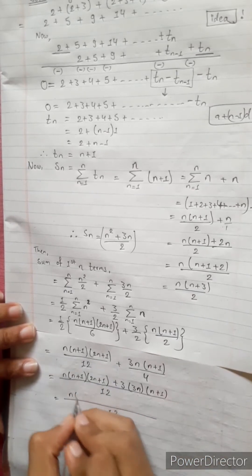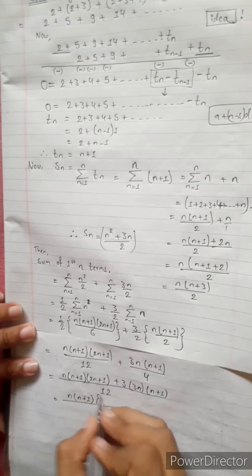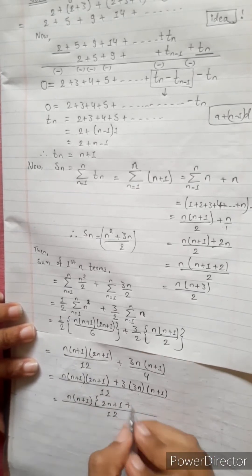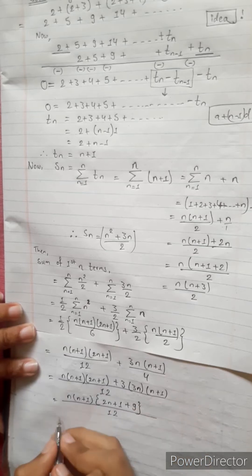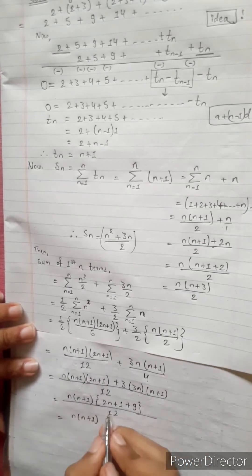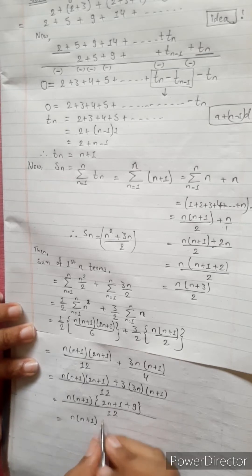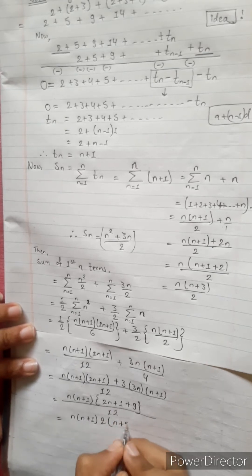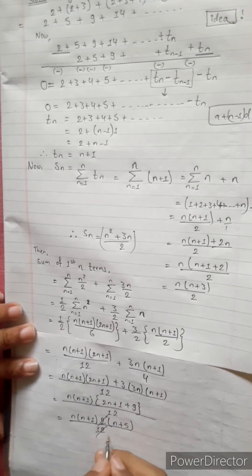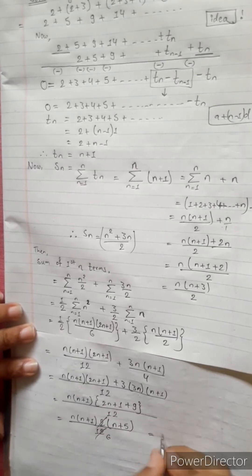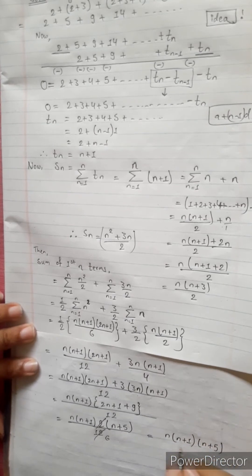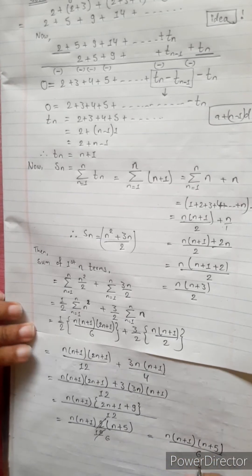What is common? n(n+1) is common to both terms. Taking n(n+1) as the common factor, the remaining terms are (2n+1) from the first part and 3·3 from the second. After simplification with denominator 12: n(n+1) times (2n+10) divided by 12, equals n(n+1) times 2(n+5) divided by 12, which simplifies to n(n+1)(n+5) divided by 6. That is our answer.